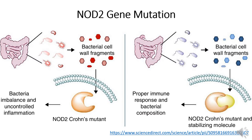To the right, we can see that bacteria is entering the large intestine, and the stabilizing molecule is going to bind to the NOD2 Crohn's mutant. This is going to cause a proper immune response, and this is what is supposed to happen. But to the left, bacteria is entering the gut and there is no stabilizing molecule. So in Crohn's disease, there is going to be a dysregulated immune response.